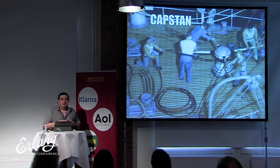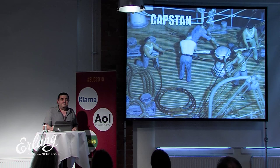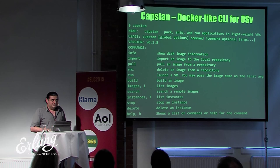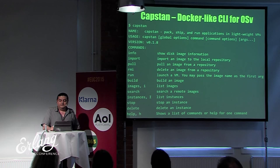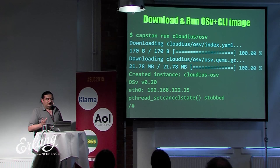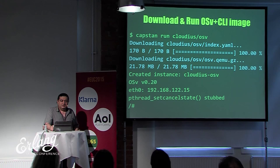People like Docker because it provides a great developer experience with a CLI to build, run, and share container images. OSV provides something similar called Capstan — basically Docker but for OSV. With Capstan you can build, search, and create virtual machine images for OSV. To try OSV on your machine, install QEMU and KVM, then install Capstan. Type `capstan run cloudius/osv` to download the official OSV image and run an instance on your machine.